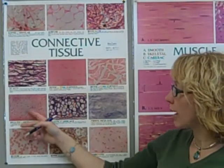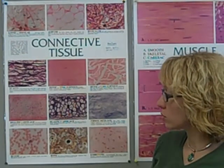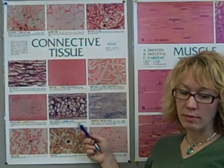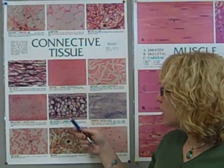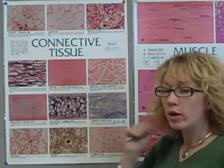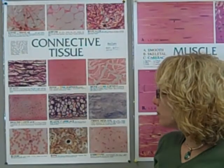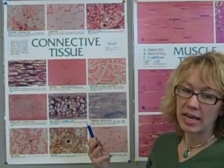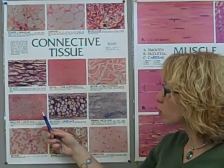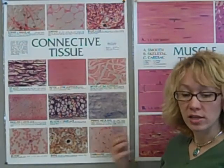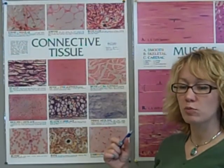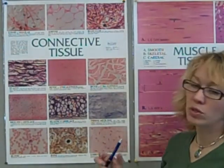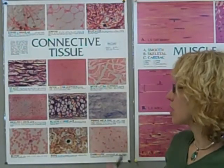Instead of having hard bones, the fetus has a hyaline cartilage model that gets replaced with bone during development. Elastic cartilage, as the name implies, is very flexible — it's found in the epiglottis, which prevents food from entering the trachea, and in the ear. If you wiggle your nose you feel the rigidity of hyaline cartilage, while the ear feels more flexible, reflecting the elastic cartilage there. Fibrocartilage has so many fibers it's difficult to see the cells, and it's found in the intervertebral discs, knee joints, and the pubic symphysis where the two hip bones meet.